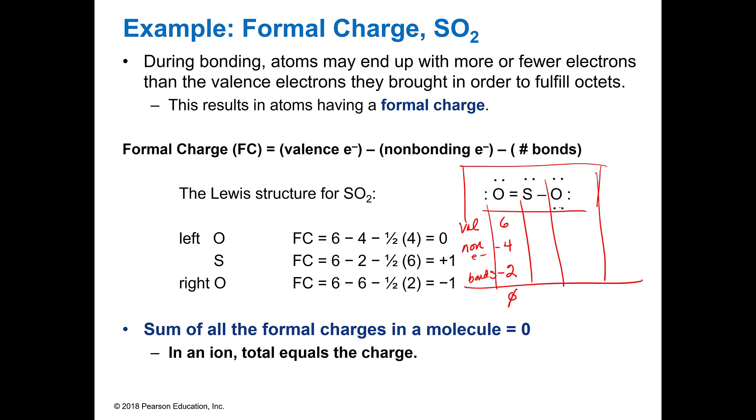Then you go to the sulfur. Sulfur is in the same group. So it has six. It has two non-bonding and it has three bonds. So six minus five is a plus one.